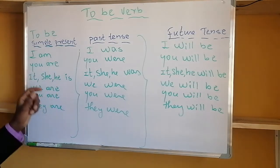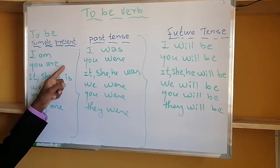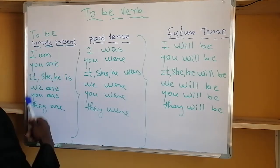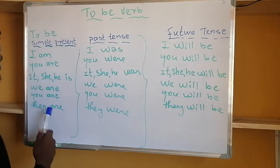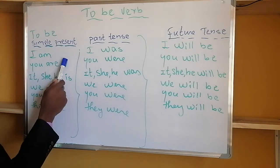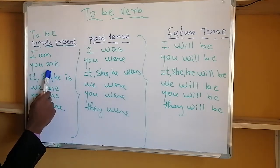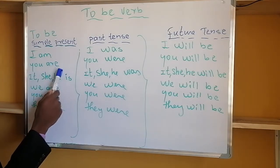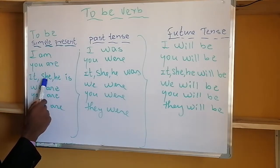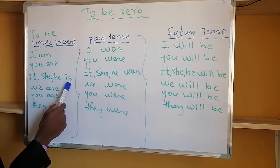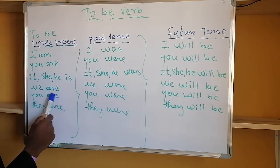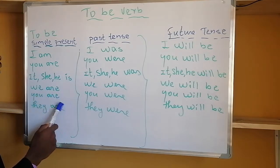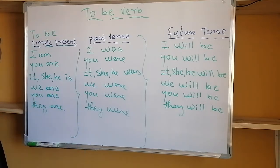Present tense: I am, you are, she is, we are, you are, they are.